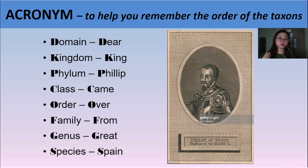I like to use 'Dear King Philip Came Over From Great Spain.' So D — Dear — corresponds to domain. King — K — is kingdom. Philip, starts with P, is phylum. Came, starts with C, is class. Over, starts with O, is order. From — family. Great — genus. S — species. So this is how I remember domain, kingdom, phylum, class, order, family, genus, and species.